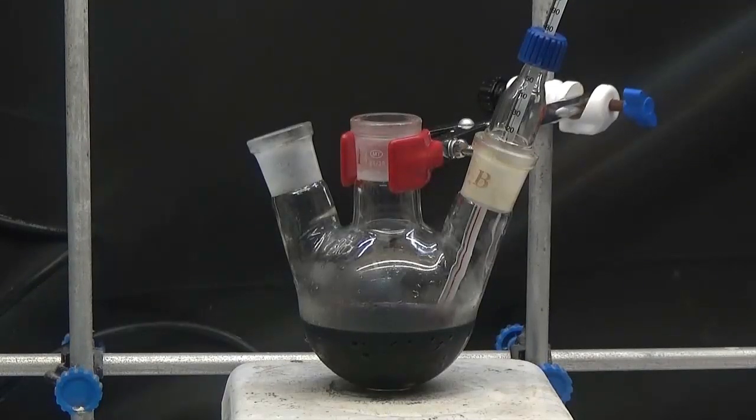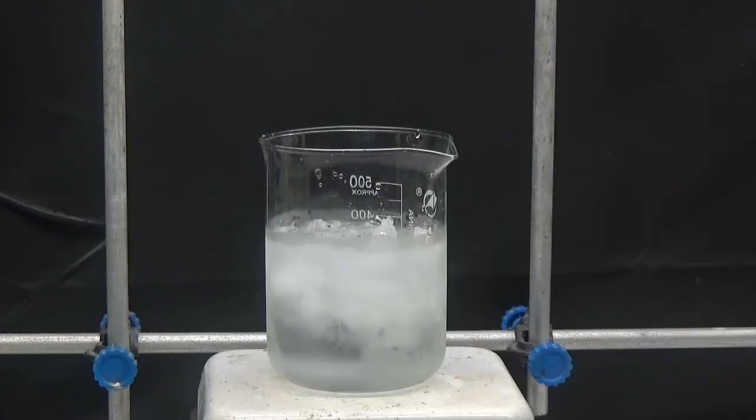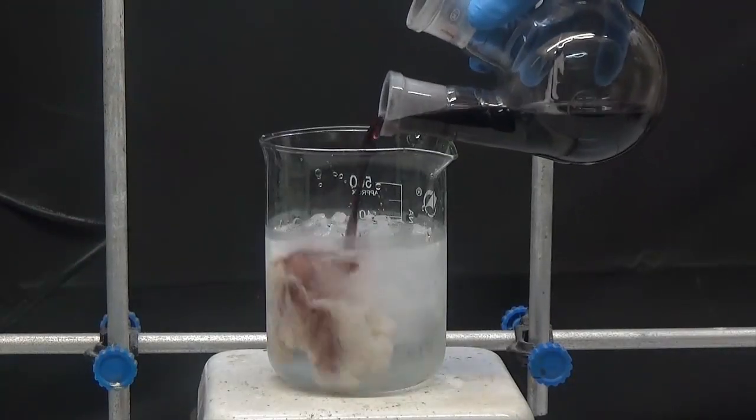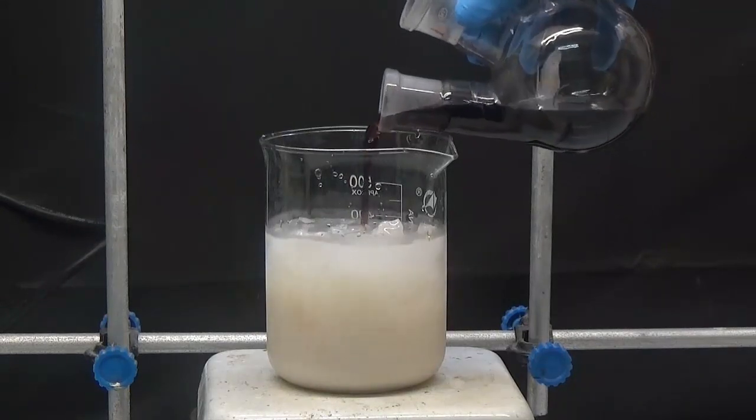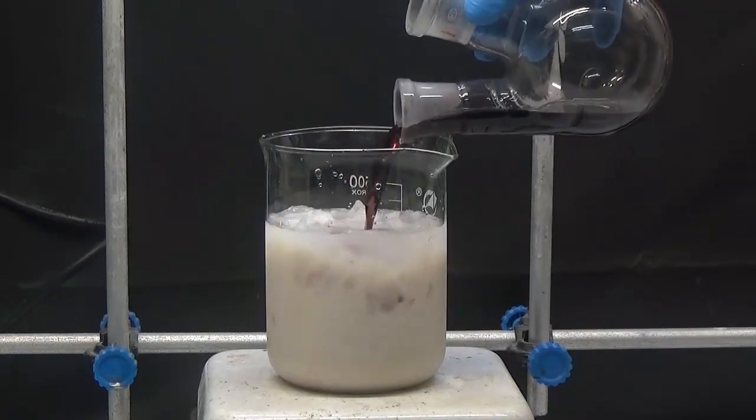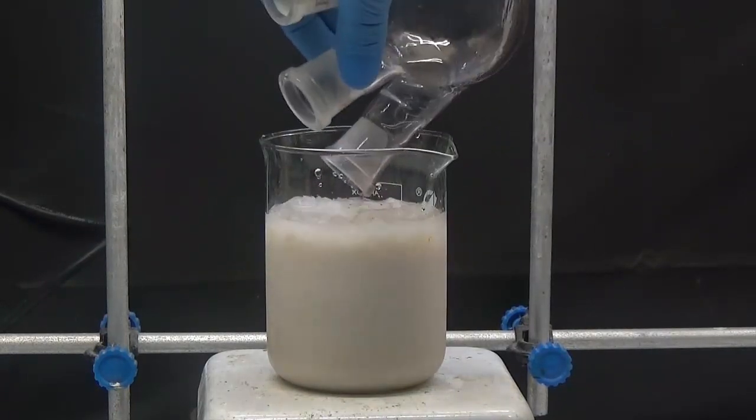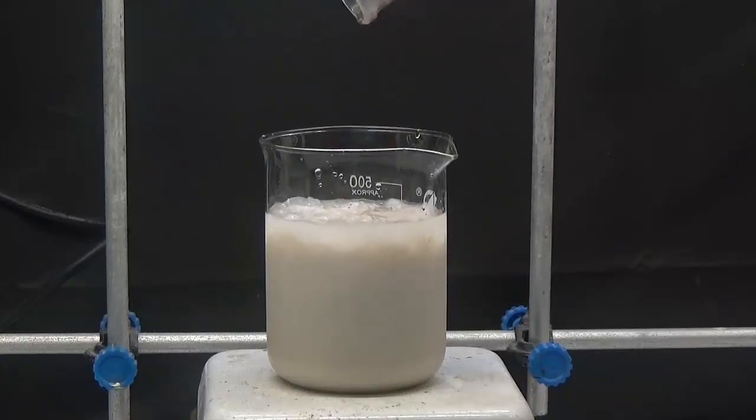After all the resorcinol had been added, it was left at room temperature for 18 hours. After this time, the mixture is poured into a 500 ml beaker with 220 ml of water and 150 grams of ground ice with stirring.